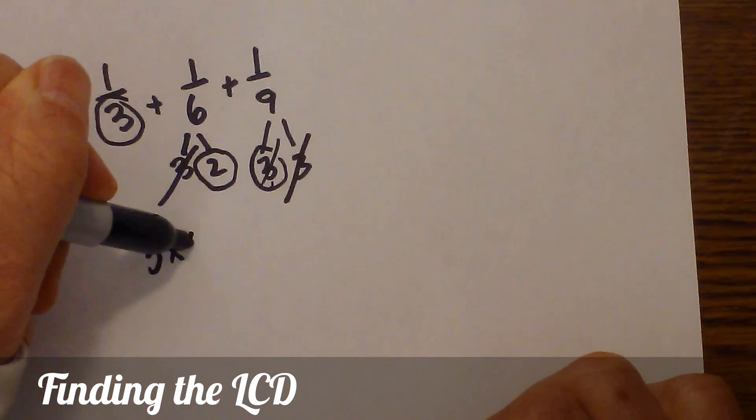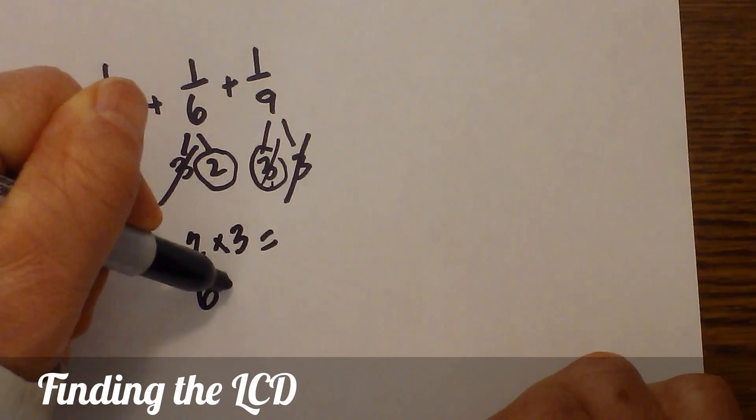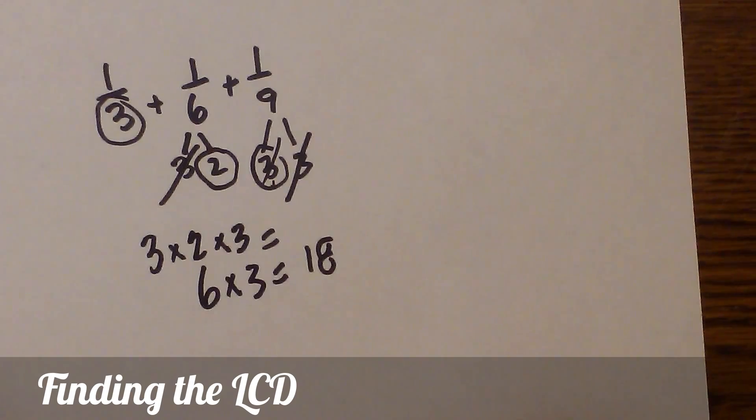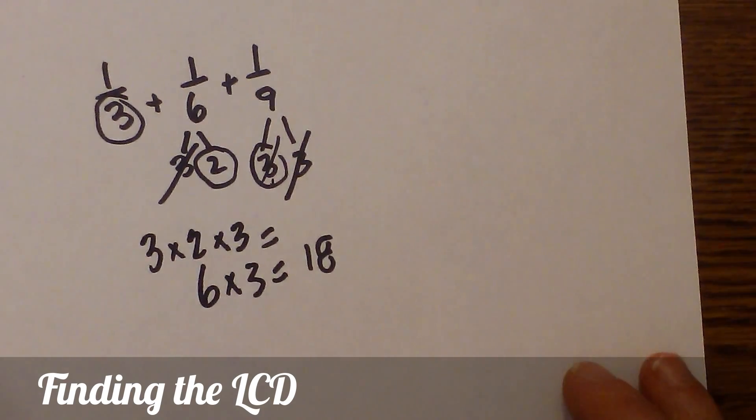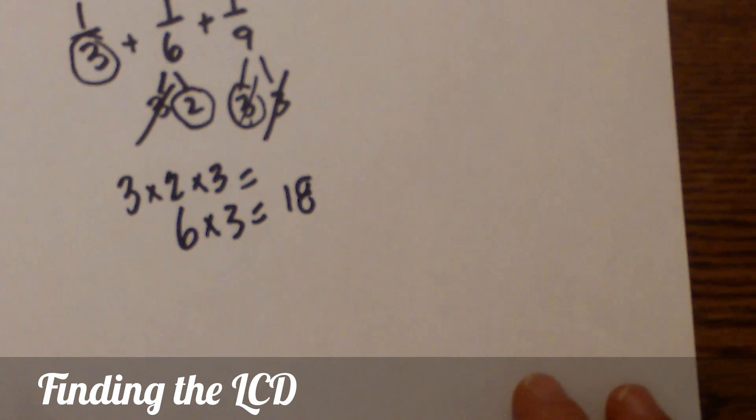So now I have three times two times three, which is three times two is six, and six times three is eighteen. Let's work one more, a little bit more challenging.